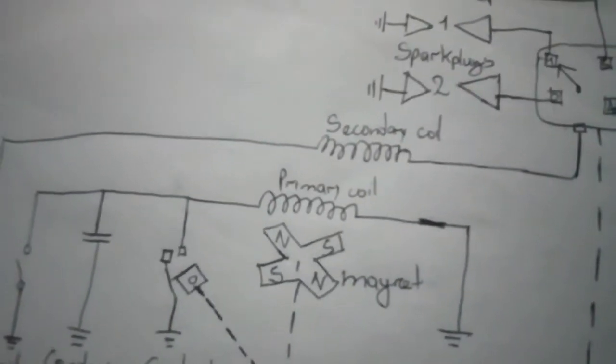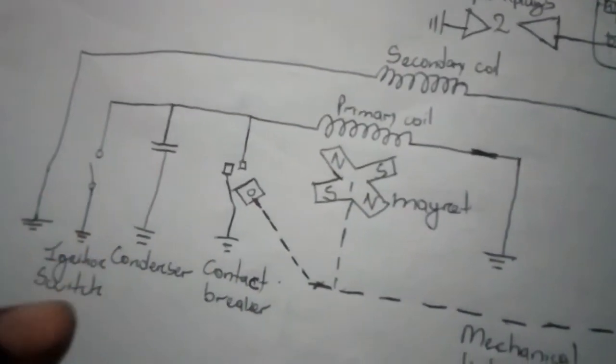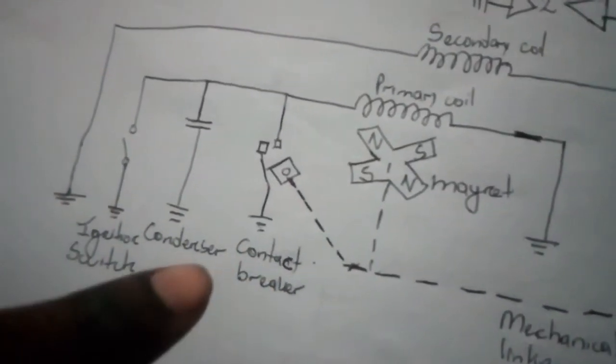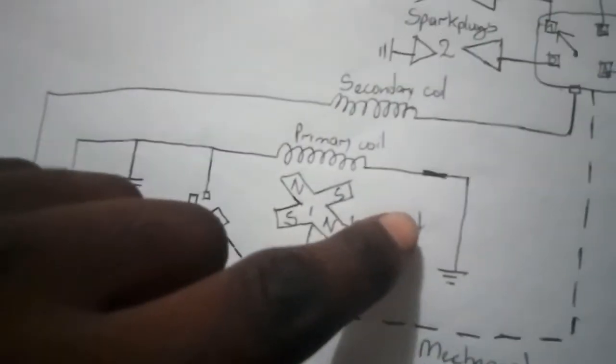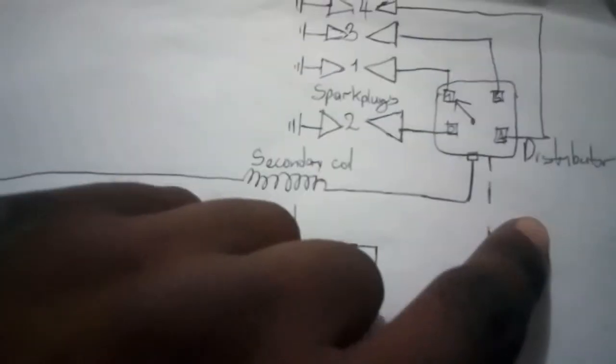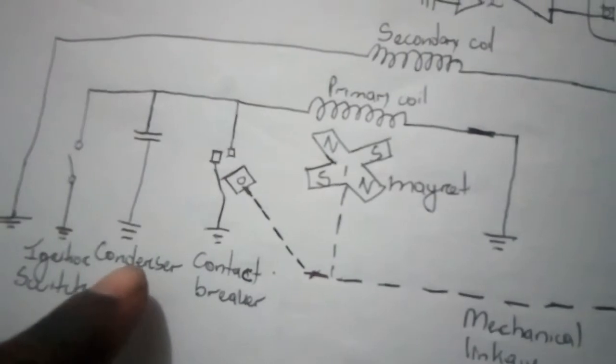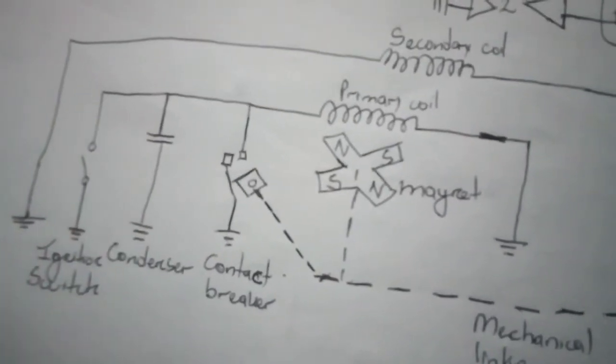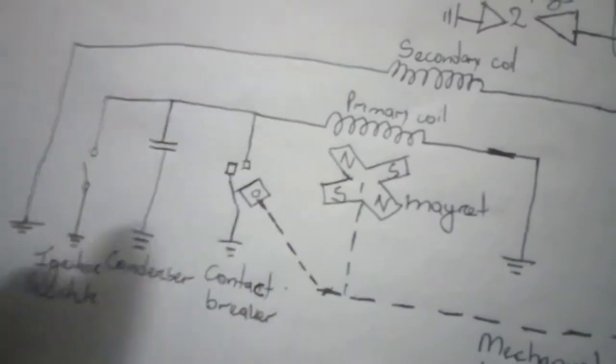Now we're just doing a basic understanding today. So we now know the function of our contact breakers, magnet, primary coil, secondary coil, and distributor. The condenser is a capacitor and what this does is prevent arcing between the contacts.